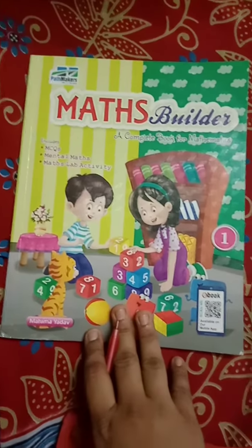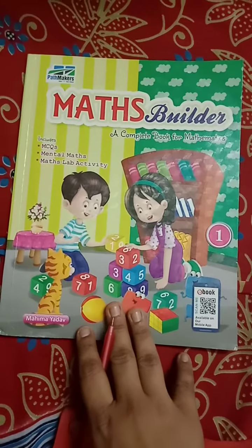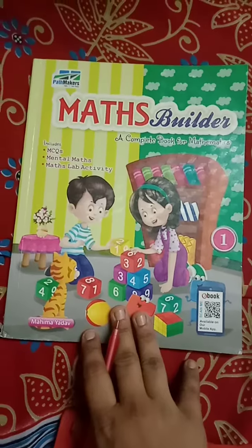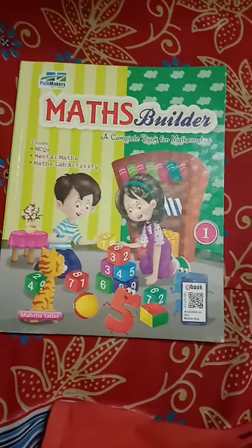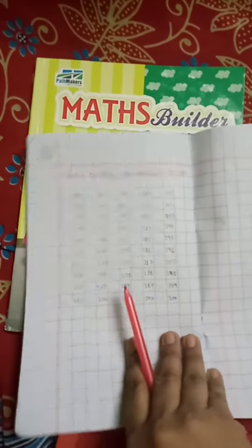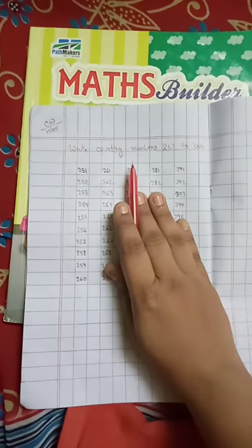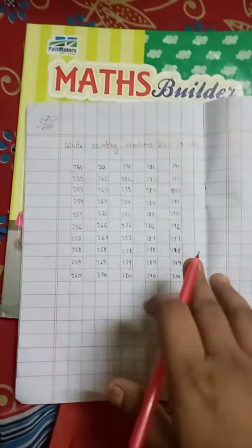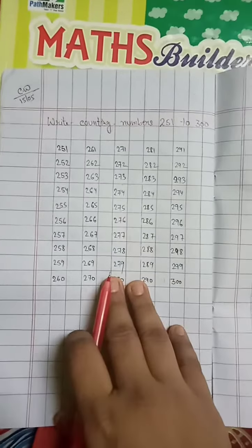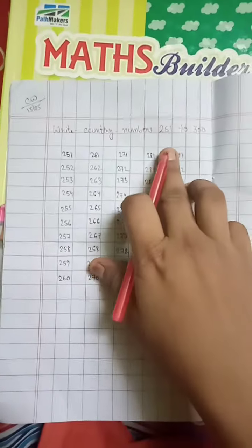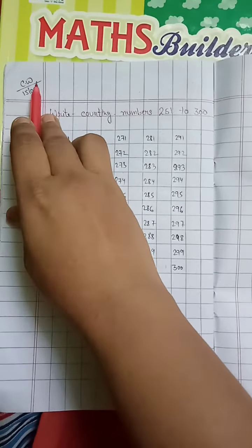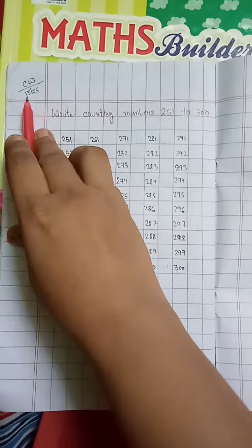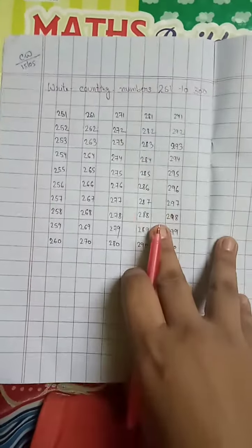Hello my dear students, now again your Shaheen ma'am is here. This is your study time, so take out your maths copy. As in previous class we have written counting numbers from 201 to 250, today we will write counting numbers from 251 to 300. So write here classwork, put today's date 15th April, and now let's start.